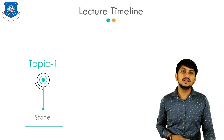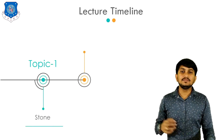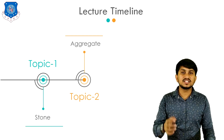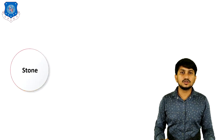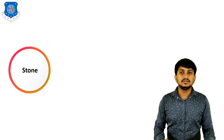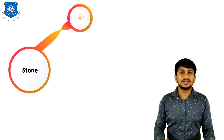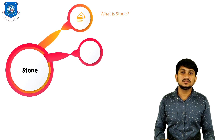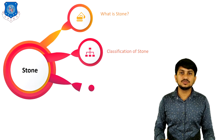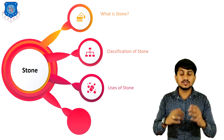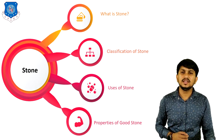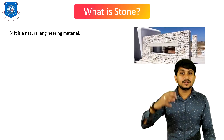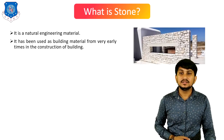In today's lecture, we will discuss two materials: first, stone, and second, aggregate. Without wasting much time, let's begin with stone. We will discuss: what is stone, classification of stone, various uses of stone, and lastly, the properties of good stone.